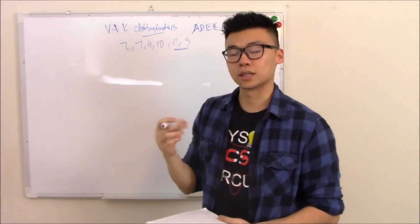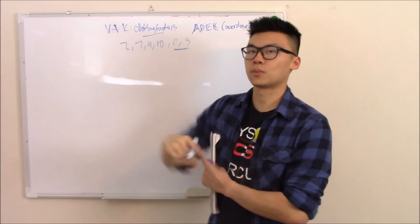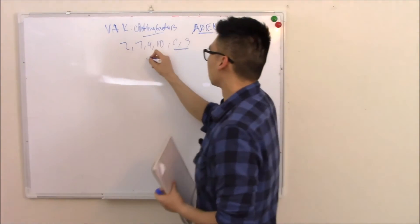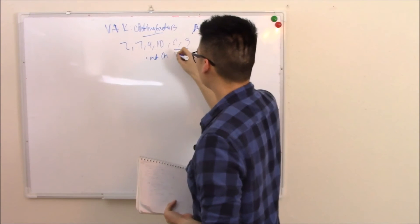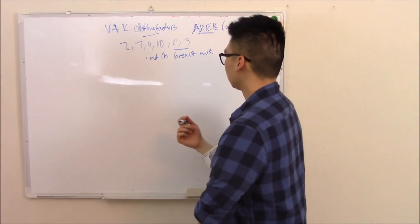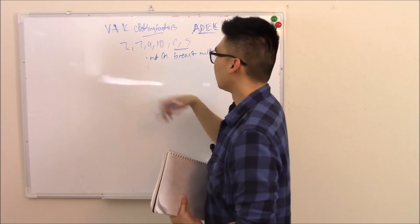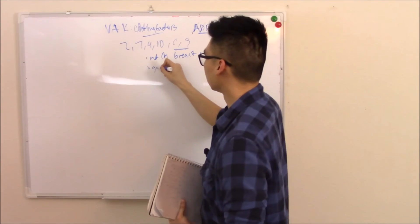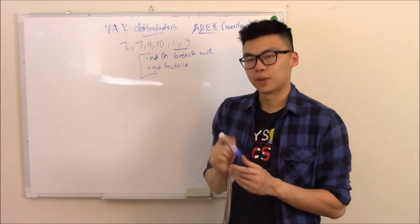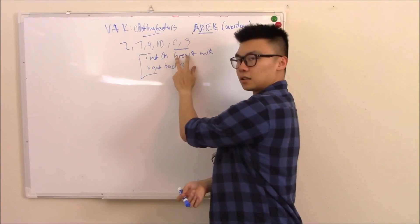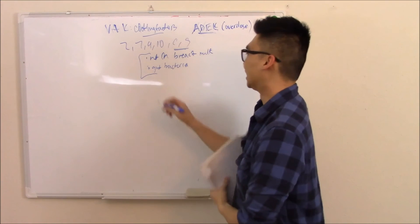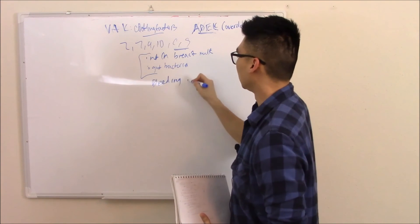You might have a deficiency in it early on because it's not found in breast milk. Do you remember what other vitamin that we talked about isn't found in breast milk? Vitamin D. Good. So it's not found in breast milk. But it is found and it is made by gut bacteria. Now here's the problem. Babies don't have a lot of gut bacteria. And if they're only drinking breast milk, then they can be vitamin K deficient. And because they're vitamin K deficient, they can have bleeding. They're not making those clotting factors.